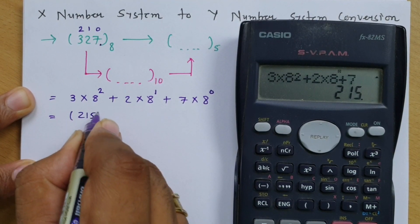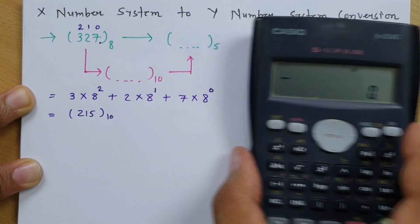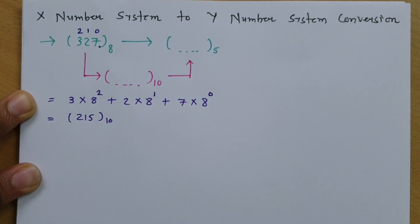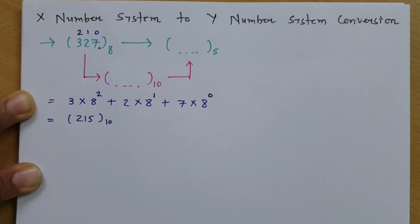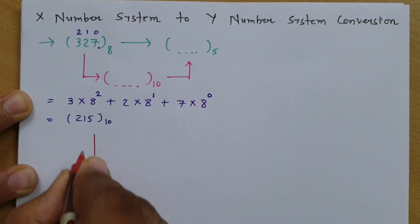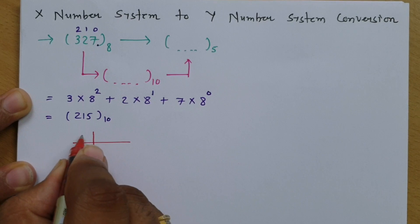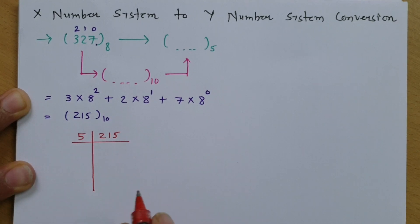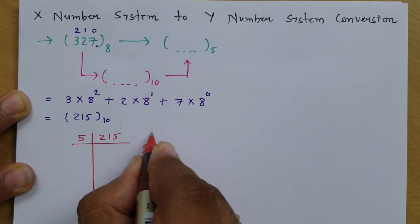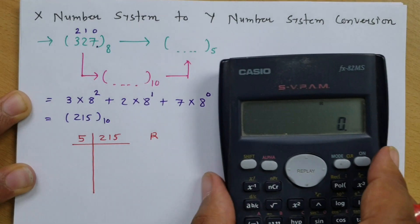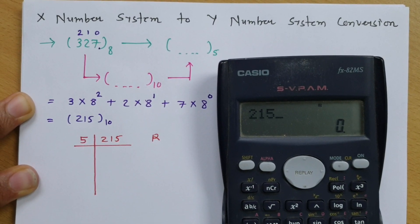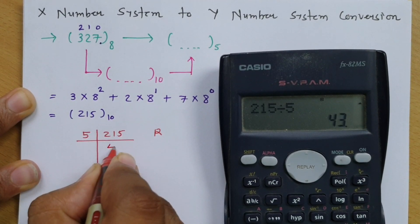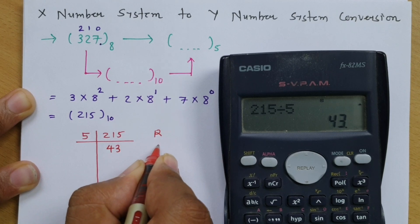The result is 215 in decimal. Now to convert 215 into base 5, we use the division rule. We divide 215 by 5: that gives 43 with no fractional value, so the remainder is 0.